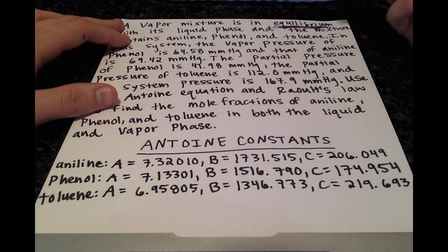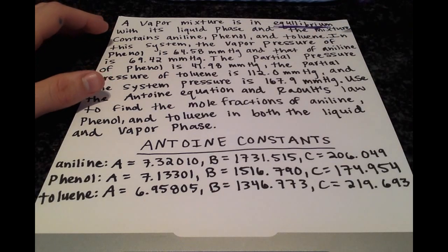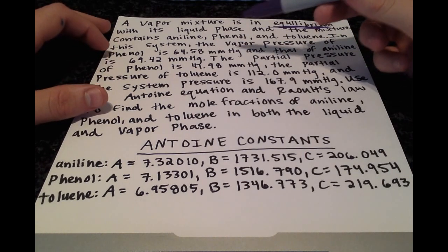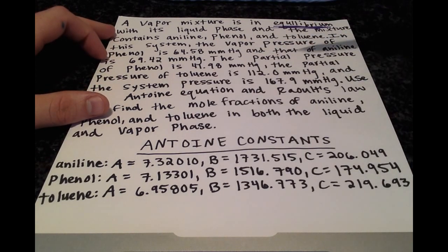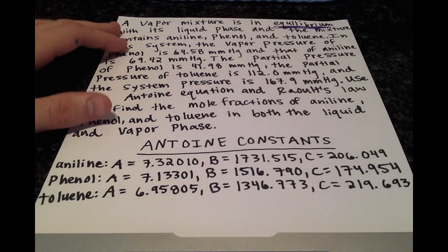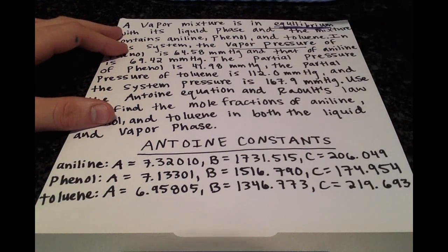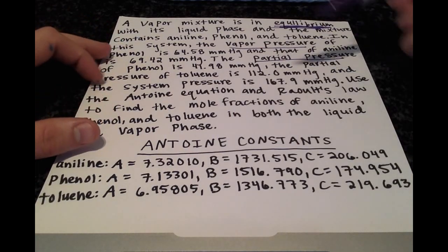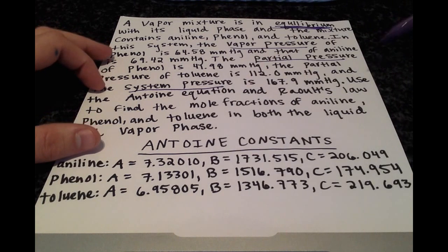And it contains three components: aniline, phenol, and toluene. In the system, the vapor pressure of phenol is 64.58 and that of aniline is 69.42. And in addition to vapor pressures, we have some partial pressure values. And the system pressure is also provided.